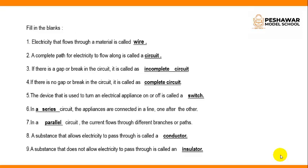Fill in the blanks. Number 1: Electricity that flows through a material is called wire. Number 2: A complete path for electricity to flow is called a circuit. Number 3: If there is a gap or break in the circuit, it is called incomplete or open circuit. Number 4: If there is no gap or break in the circuit, it is called complete or closed circuit. Number 5: The device that is used to turn an electrical appliance on or off is called a switch.